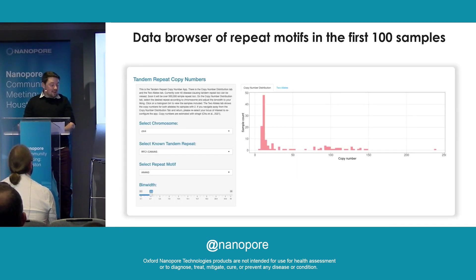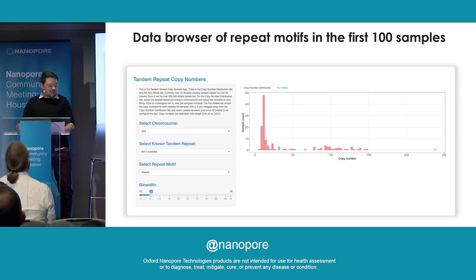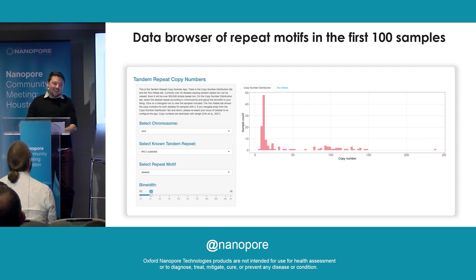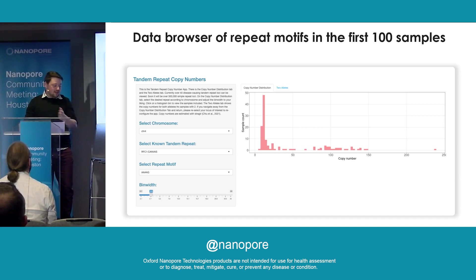Another thing we can do with this data is something that a colleague of mine, Sophie Gibson, who's another graduate student in the lab, has done. This is an application she built to look at the distribution of variable number tandem repeats across different samples — a distribution of one of the motifs of a repeat region. You can see that even in our thousand genome samples there's quite a wide distribution, including one sample that is a bit of an outlier.